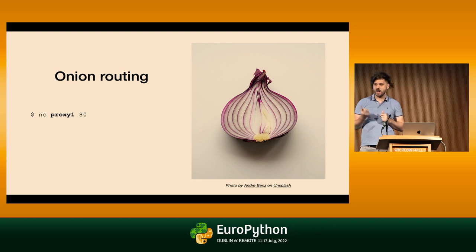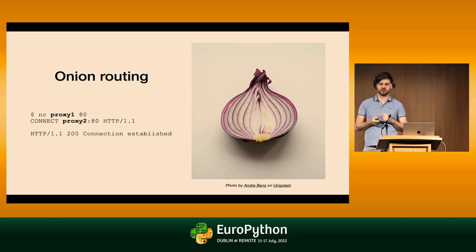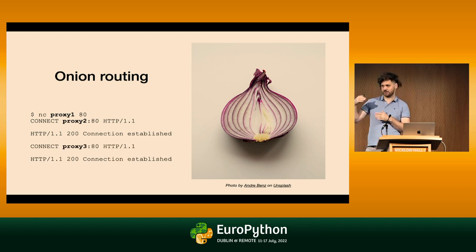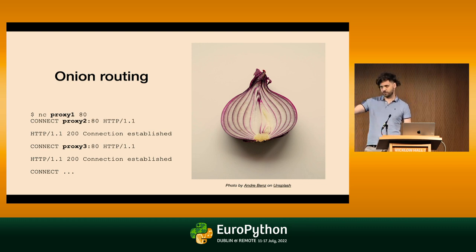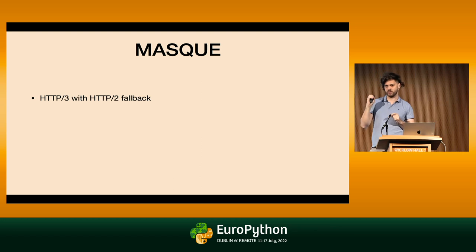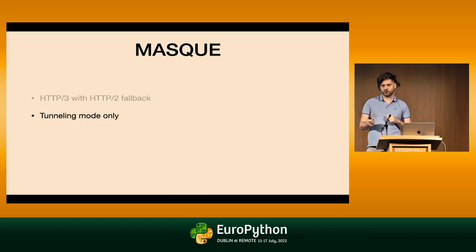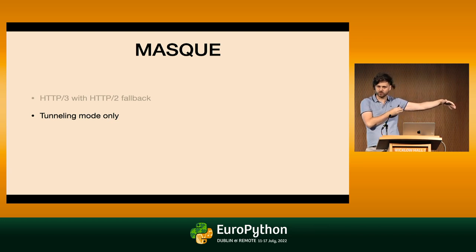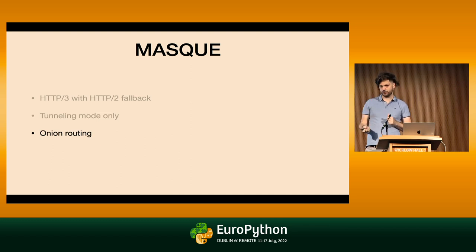I can connect to one proxy and ask it to set up a tunnel to a second proxy. Then, through the first proxy and second proxy, I can connect to a third proxy, and so on as many times as I want. This is great for your privacy because each proxy just sees the IP address before and after, and not everything. MASQUE proxies are HTTP/3 proxies — they should also support HTTP/2 as a fallback for networks where UDP is being blocked. MASQUE proxies work in tunneling mode only. It doesn't make sense to implement a forwarding legacy mode for a small fraction of unencrypted traffic. The MASQUE spec explicitly mentions onion routing, so it's there by design.